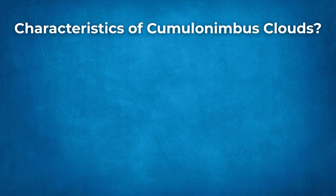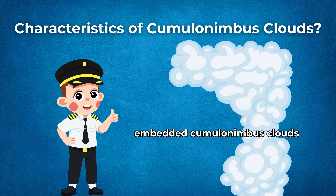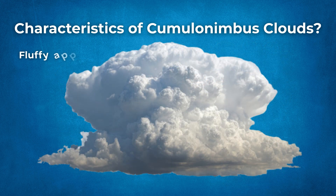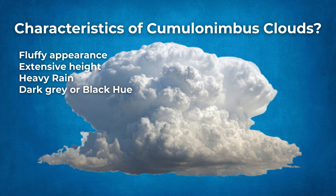Cumulonimbus clouds are pretty distinctive and easily identified. They have several easy-to-spot characteristics. A billowing, fluffy appearance — most people describe cumuliform clouds as having a cotton ball or cauliflower appearance — is normally a sign of an unstable air mass. Cumulonimbus clouds are packed with energy and can grow to colossal heights, as high as 52,000 feet. They are also associated with heavy rain and have a dark gray or even black hue due to being moisture-laden; the greater the moisture content, the darker the color.